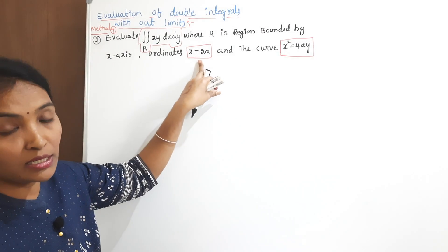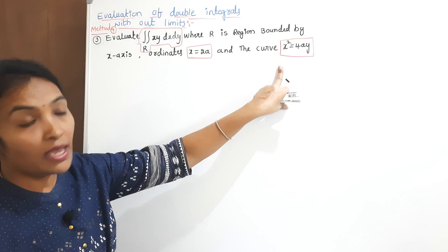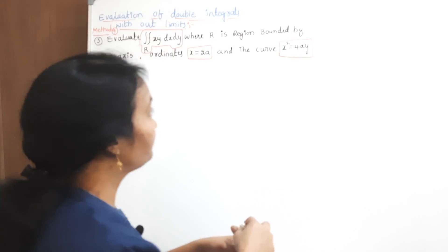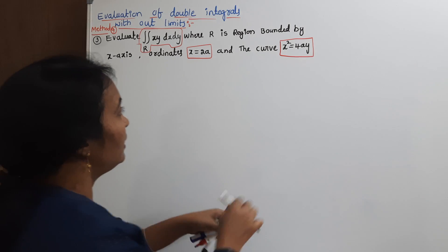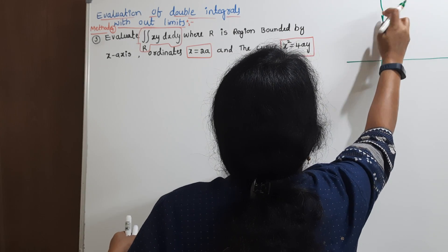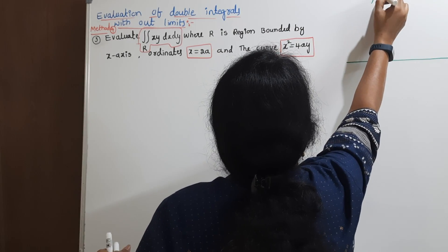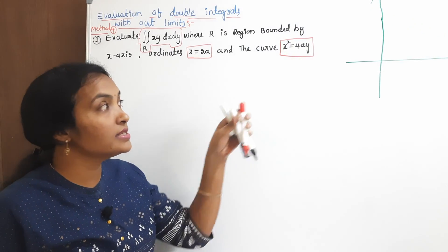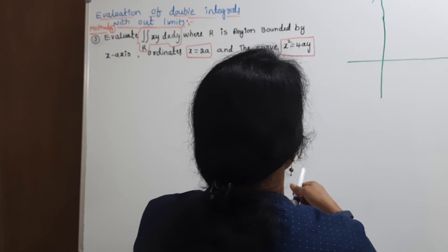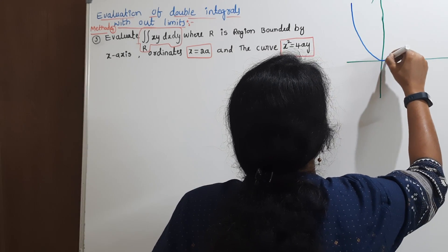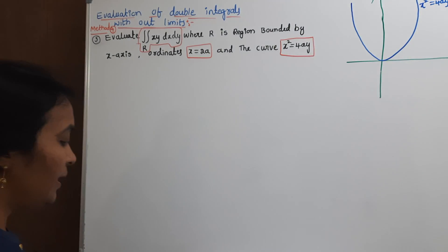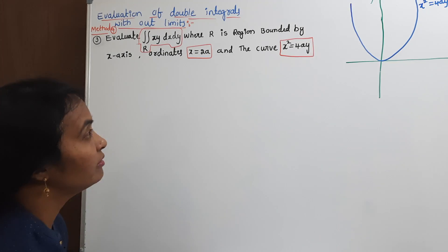We have x in terms of the ordinate and the curve x² = 4ay. First, consider the positive x and y axes. The equation x² = 4ay is a parabola along the y-axis. Draw the parabola along the y-axis — this is the x² = 4ay parabola.